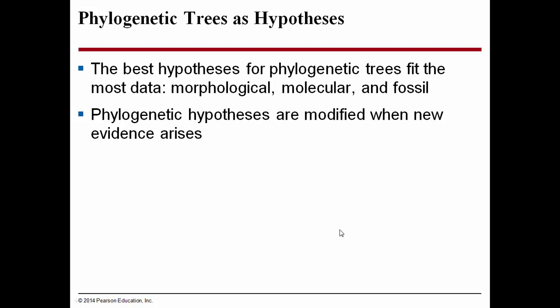The best hypotheses for phylogenetic trees fit the most data — morphological data, molecular data, and fossil data. We try to look at all three groups to determine phylogenetic trees. Phylogenetic hypotheses are modified when new evidence arises, and this does happen not infrequently. In each discipline of biology, there are boards of taxonomists. When a new species is discovered, or a species is found to be a cryptospecies — a species hidden in plain sight — they can determine a new name and new taxonomy, which will change the phylogenetic inferences as that new evidence arises.